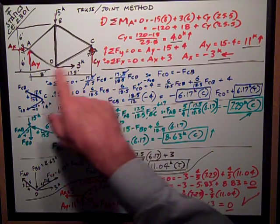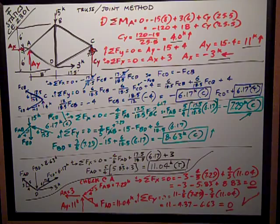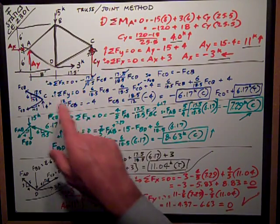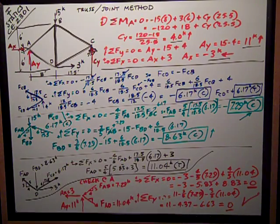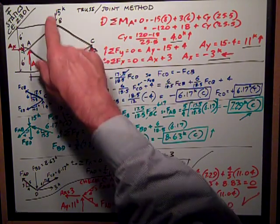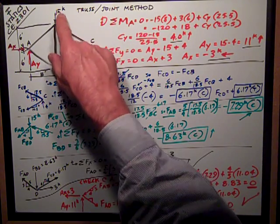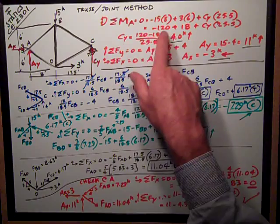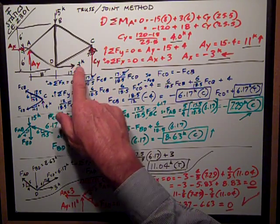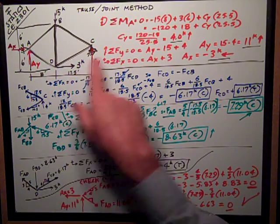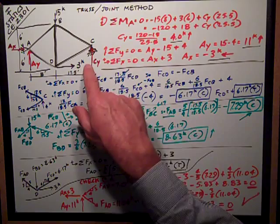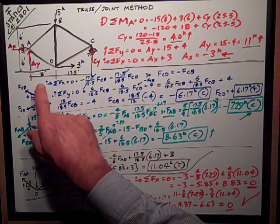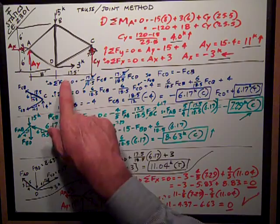First thing I'm going to do whenever I can is solve for the reactions of this truss. I always want to take a sum of moments about one of the reactions to eliminate those forces from my equation. I'm going to sum moments about point A. It's equal to zero. I've assumed counterclockwise is positive, so this is a clockwise moment created by the 15 kips. It's negative 15 times its moment arm of eight feet, plus the applied force of three kips, which is counterclockwise about point A, times its six-foot moment arm, plus CY times 25.5, positive because it's counterclockwise also, creating the 25.5 foot moment arm, which comes from the eight foot plus 17.5 feet.